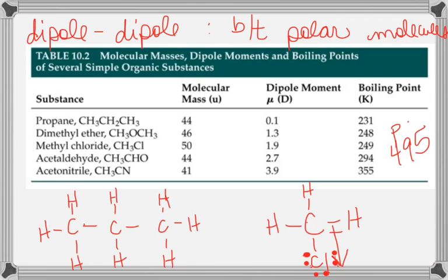The arrow shows electronegativity. Electronegativity arrows go on bonds and always point towards the more electronegative atom. To know which atom is more electronegative, use the periodic table. My trend is: electronegativity increases bottom to top and left to right.